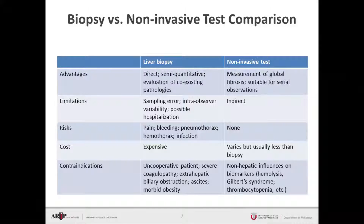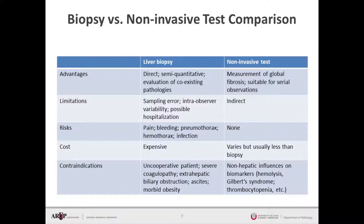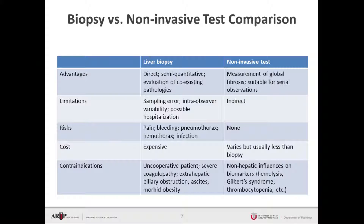How does biopsy versus non-invasive test assessment compare in terms of advantages, limitations, risks, and cost? The advantage of liver biopsy is that it is direct, allows evaluation of coexisting pathologies, and is semi-quantitative. However, its limitations include complications following the procedure, intra-observer variability, and sampling error. Risks include pain, bleeding, hemothorax, and the possibility of infection and hospitalization. Biopsies are also expensive.